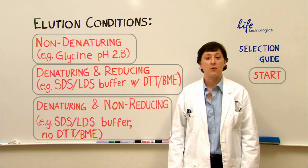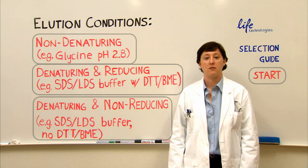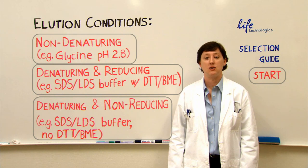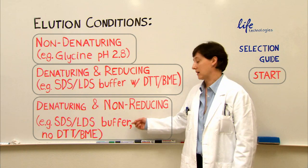And if for some reason you only want to use denaturing conditions that are non-reducing and you don't want to have either DTT or BME in your elution buffer, then go ahead and click here.